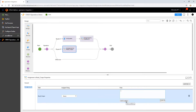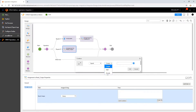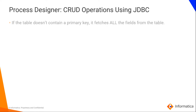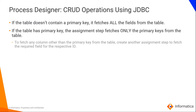We can also add a condition if we want to read data of a specific ID. Note that if the table doesn't contain a primary key, it will fetch all the fields from the table. If the table has a primary key, the Assignment step will only fetch the primary keys or IDs from the table. Here, for our table, ID is the primary key. If we want to fetch any column other than the primary key from the table, we can create another Assignment step to fetch the required field for the respective ID.